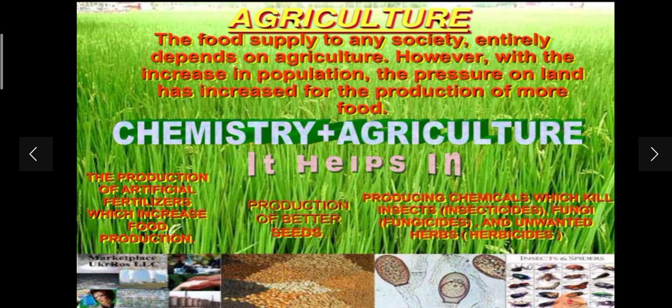Herbicides inhibit the growth of unwanted plants, and insecticides destroy the insects which harm or destroy crops. This is the importance of chemistry in agriculture.